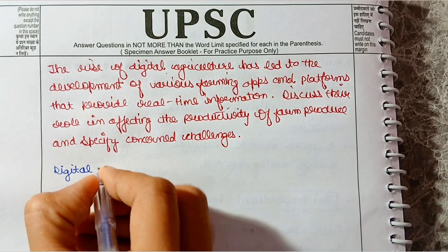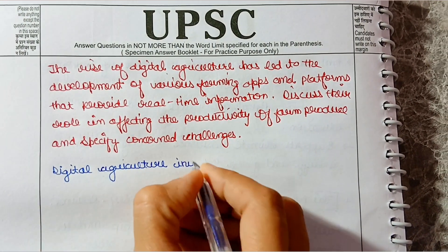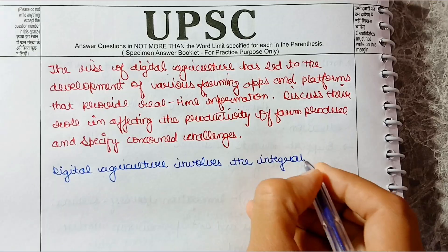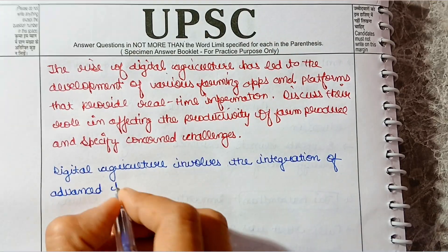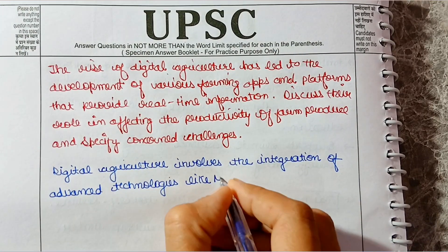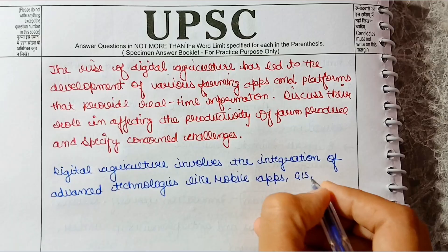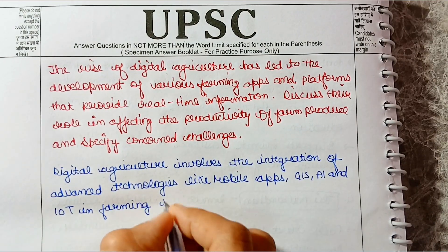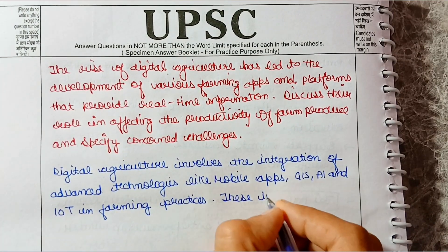Welcome back everyone, today's question is the rise of digital agriculture has led to the development of various farming apps and platforms that provide real-time information, discuss their role in affecting the productivity of farm produce and specify concerned challenges.